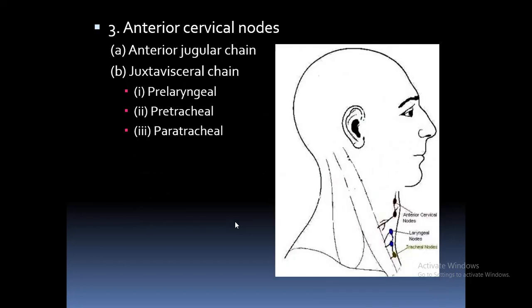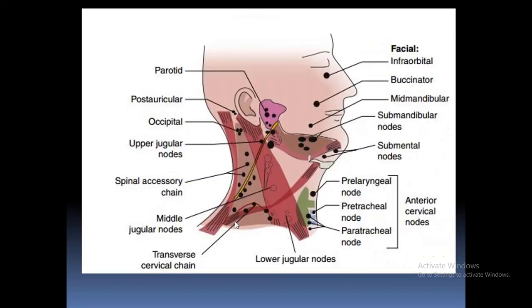The anterior cervical nodes are further divided into the anterior jugular chain, present along the anterior jugular vein, and the juxtavisceral chain, which includes the pre-laryngeal, pre-tracheal, and paratracheal nodes. In this picture, you can see the anterior cervical nodes, lower jugular nodes, mid jugular nodes, upper jugular nodes, nodes in the posterior triangle along the spinal accessory chain and transverse cervical chain, and nodes in the anterior triangle including submental and submandibular nodes.